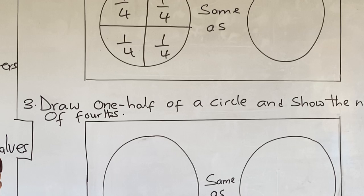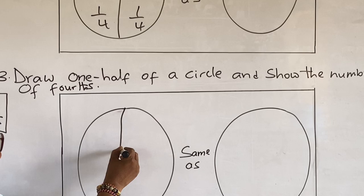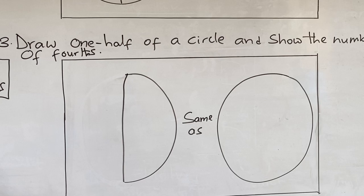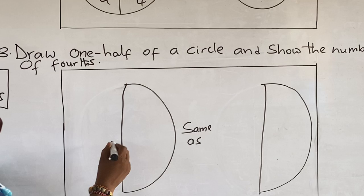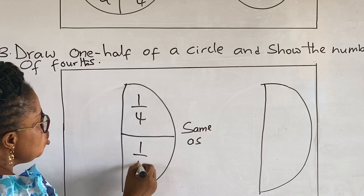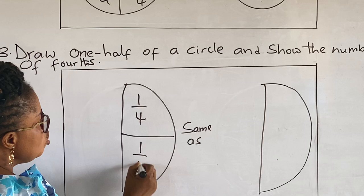Now, we are also to divide one half of a circle into quarters. When we divide this circle into two halves, we are going to get a half. Now, let's divide this half into two. When we divide the half into two, we are going to get two quarters. Two quarters equals to one half.